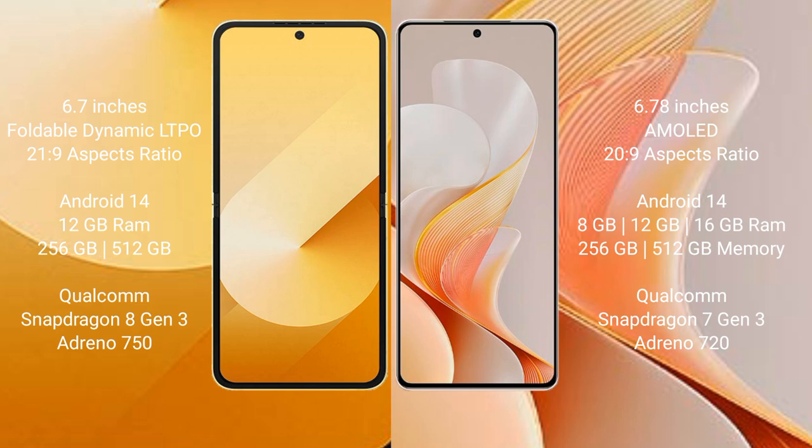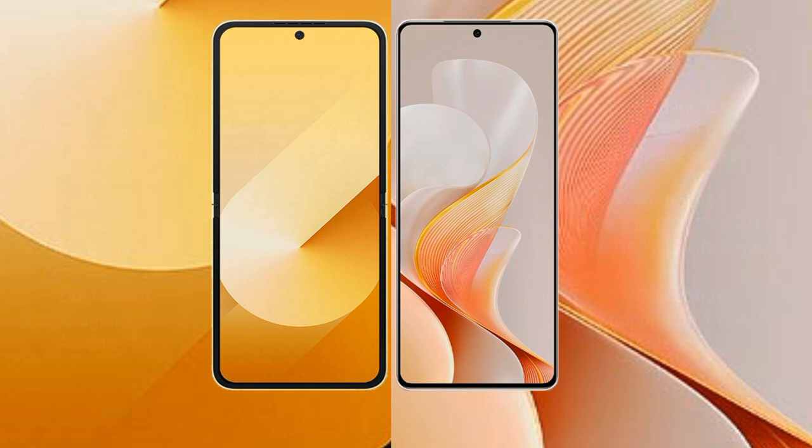Vivo S19 comes with 8GB, 12GB, or 16GB RAM and 256GB or 512GB internal storage, Qualcomm Snapdragon 7 Gen 3 processor, and Adreno 750 GPU.